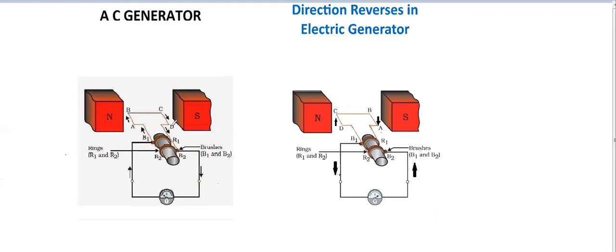So here we can see the current in the coil flows in the AB, CD direction and in the external circuit, current flows from brush B1 to B2. After half rotation, when side CD comes to the left hand side and side AB comes to the right hand side, if we apply Fleming's right hand rule to side CD, then direction of current induced in side CD is from D to C direction, and inside AB it will be from B to A direction. So here the induced current flows in the coil in the D, C, B, A direction, and in the outer circuit current flows from brush B1 to B2 direction.